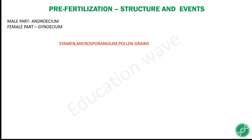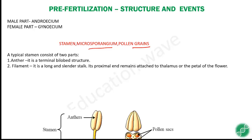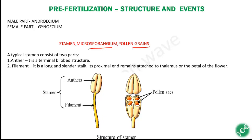Stamen consists of two parts. This is the stamen image — the upper structure is the anther and the attached stalk is the filament. Anther is a terminal bilobed structure; bilobed means it has a first lobe and a second lobe. This is called a bilobed structure. Filament is a long stalk-like structure which is attached to it. Its proximal end remains attached to the thalamus or the petal of the flower.